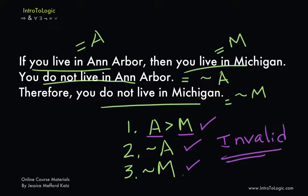Be sure you get familiar with what denying the antecedent looks like. Any argument that follows this form is an invalid form of reasoning. Another way to identify an invalid argument is to think about it intuitively. Consider someone telling you: if you live in Ann Arbor, then you live in Michigan; you don't live in Ann Arbor, so you must not live in Michigan. Anyone saying that would clearly be making a mistake, because there are other places in Michigan you could live. Both premises could be true, but the truth of those premises doesn't bring about the conclusion — it wouldn't follow that you don't live in Michigan. Maybe you live in Milan, Kalamazoo, Petoskey, or elsewhere in Michigan.